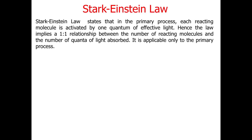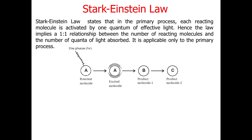The Stark-Einstein law states that in the primary process, each reacting molecule is activated by one quantum of effective light. Hence, the law implies a one-to-one relationship between the number of reacting molecules and the number of quanta of light absorbed. It is applicable only to the primary process. If we take one mole of the reactant, then one quantum or one photon of energy is required.